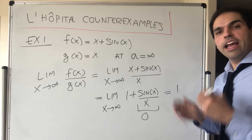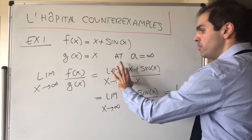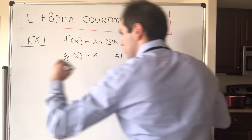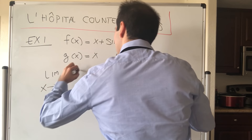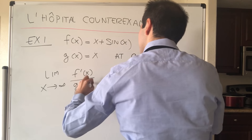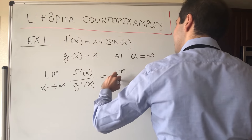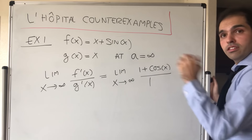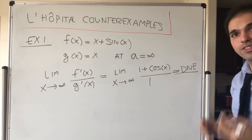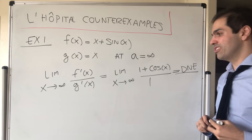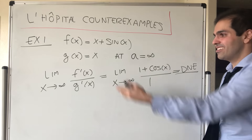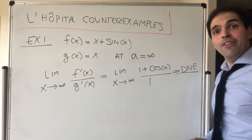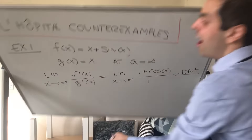However, what if we naively apply L'Hopital's rule and take the derivative of the top and the bottom? Then we get the limit as x goes to infinity of f'(x)/g'(x), that is, the limit as x goes to infinity of (1 + cos(x)) / 1. And this limit doesn't exist. So certainly we cannot apply L'Hopital's rule to this, because the limit of the quotient exists, but the limit of the quotient of derivatives doesn't exist. That was the first counterexample, and it explains why we need this assumption.